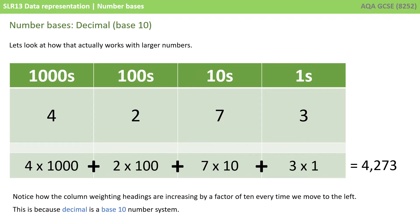Of course, we don't perform that calculation in our head when we see the number 4273. We are so used to it now that we simply read it straight out as 4,273. Notice, once again, how the column weightings, that's the headings, are increasing by a factor of 10 every time we move one space to the left, and this is because decimal is a base 10 number system.